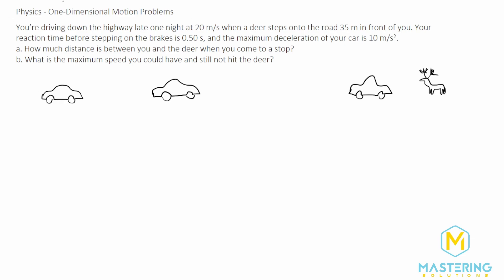They want to know what the distance is between us when we stop. For part A, let's write a list of all the variables. The X initial for this section is 0 meters and the velocity we're going is 20 meters per second. I like to label these 1, 2, and 3 for the different sections so we can keep them all straight.